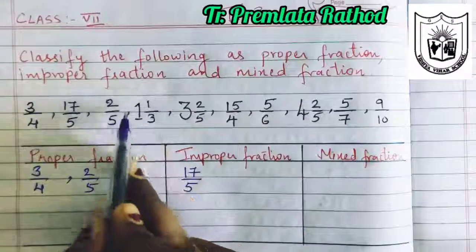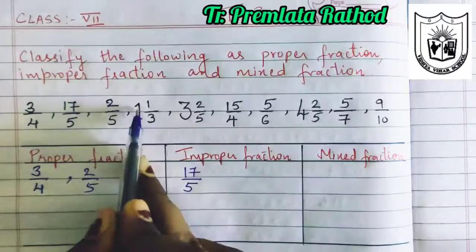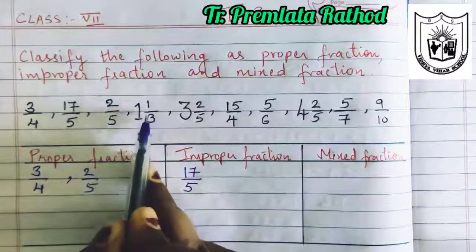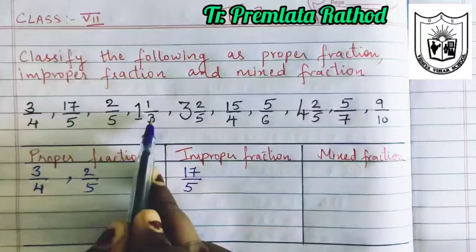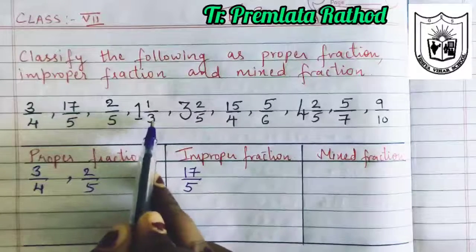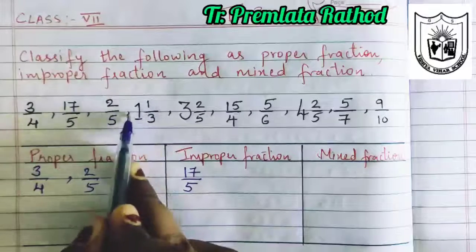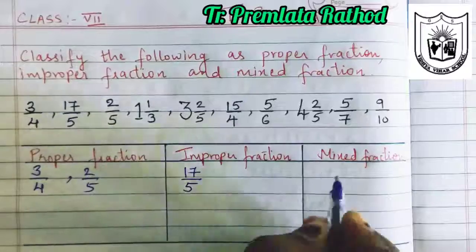Next, look at this. We have a whole number and a proper fraction. We have learned earlier that a mixture of a whole number and a proper fraction is a mixed fraction. So this will come here.